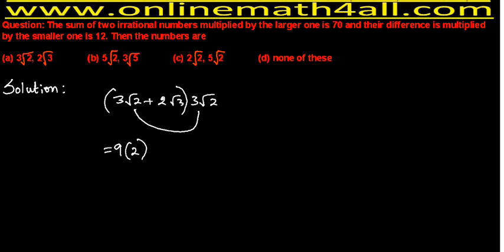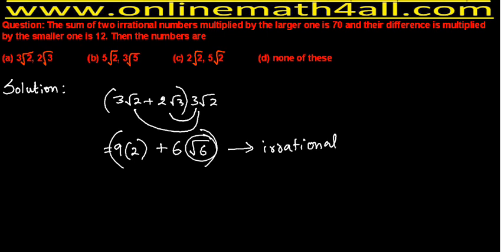The sum (3√2 + 2√3) is multiplied by the larger one, 3√2. So 3√2 × 3√2 = 9 × 2 = 18, and 3√2 × 2√3 = 6√6. The result contains √6, which is irrational. But according to the question, the sum multiplied by the larger one must equal 70 — a rational number. Since we get an irrational result, Option A is not correct.